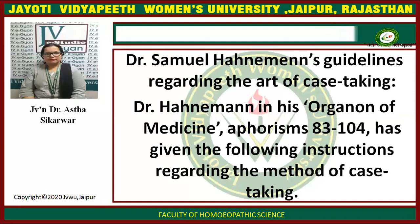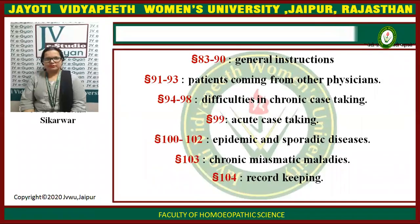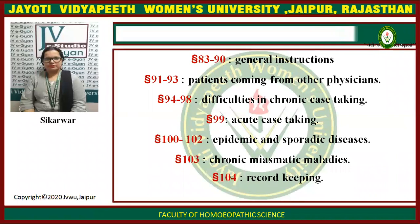Dr. Samuel Hahnemann's guidelines regarding the art of case taking: Dr. Hahnemann in his Organon of Medicine, aphorisms number 83 to 104, has given the following instructions: 83 to 90 general instructions; 91 to 93 patients coming from other physicians; 94 to 98 difficulties in chronic case taking; 99 acute case taking; 100 and 102 epidemic and sporadic diseases; 103 chronic miasmatic maladies; 104 record keeping.